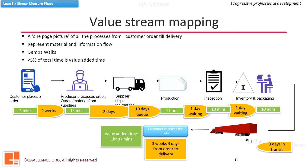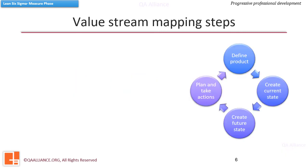Value stream mapping needs Gemba walks, which help in finding the scope of waste elimination. The steps in creating a value stream map are: 1. Define a product and scope, 2. Create the current state map, 3. Create the future state map, 4. Create a transition plan.